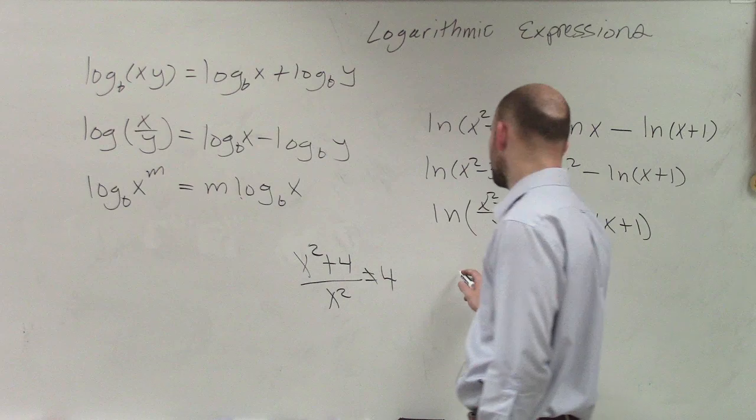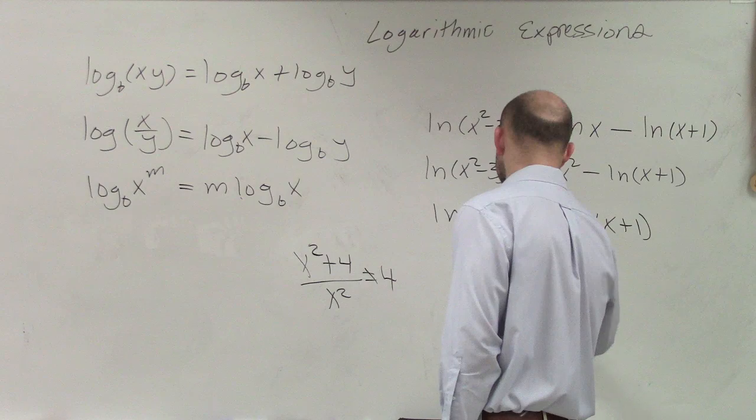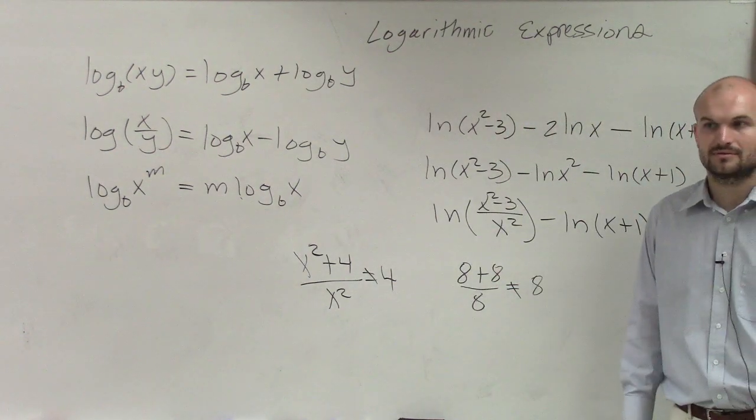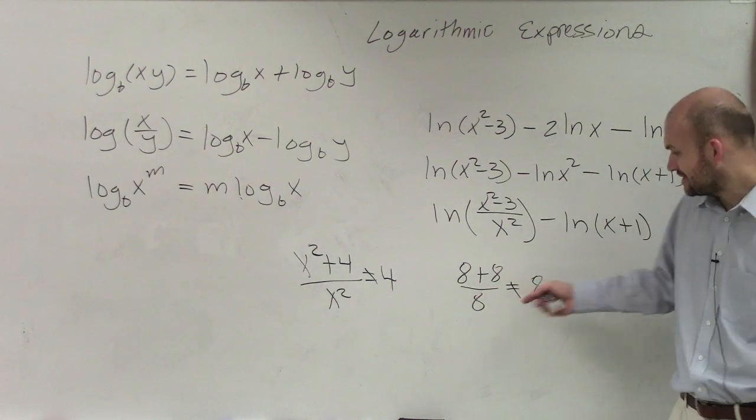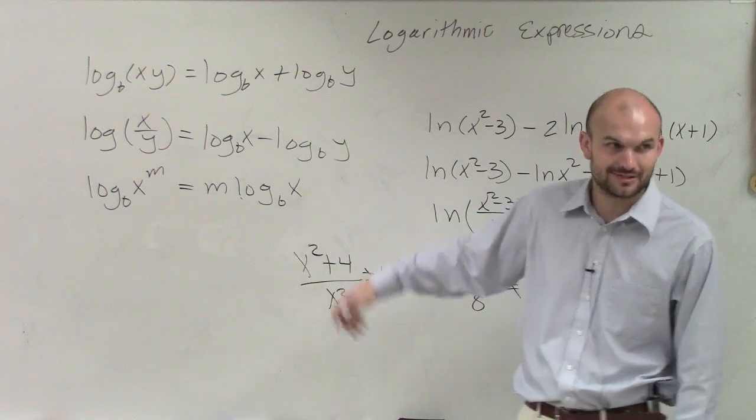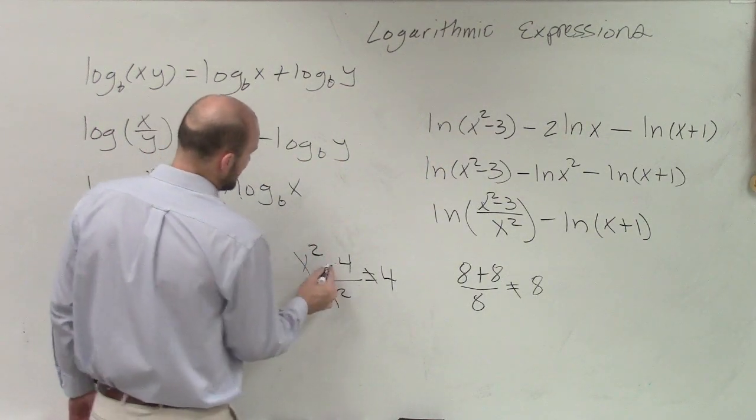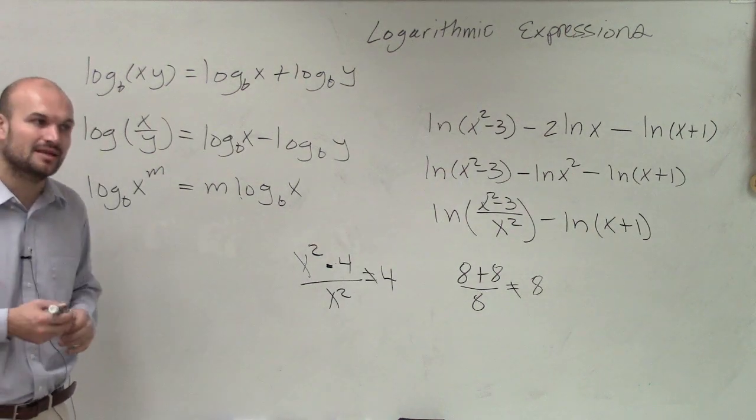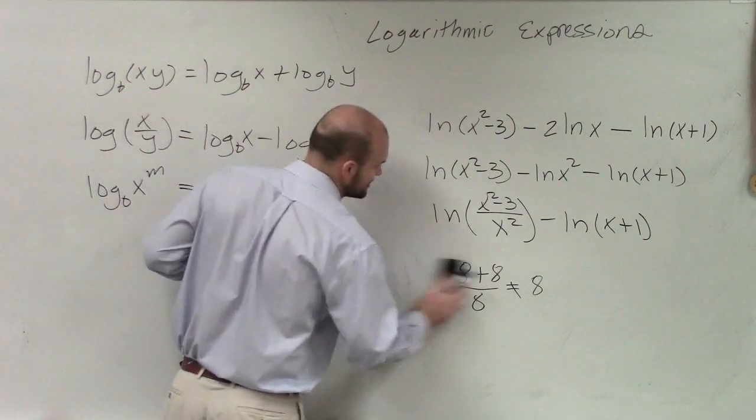Let me give you an example with real numbers. 8 plus 8 divided by 8 does not equal 8. What's 8 plus 8? 16 divided by 8? 2. 8 plus 8 divided by 8 is equal to 2. Not equal to 8. OK? So don't just say, oh, I see 2 x squareds. Let me cancel them out. Now, if this was like this, where they are multiplied by each other, then yes, you can divide those to 1. All right? So a big misconception that a lot of students have.